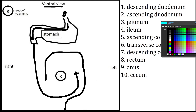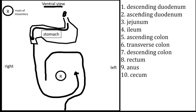To begin with we're going to look at the descending duodenum. The descending duodenum is that first part attached to the stomach that heads caudally to the right of the root of the mesentery. That would be the descending duodenum.